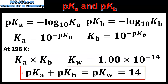If we take the log of both sides of the equation we come up with a new expression: for a conjugate acid-base pair, the pKa plus the pKb is equal to the pKw, which at 298K has a value of 14.